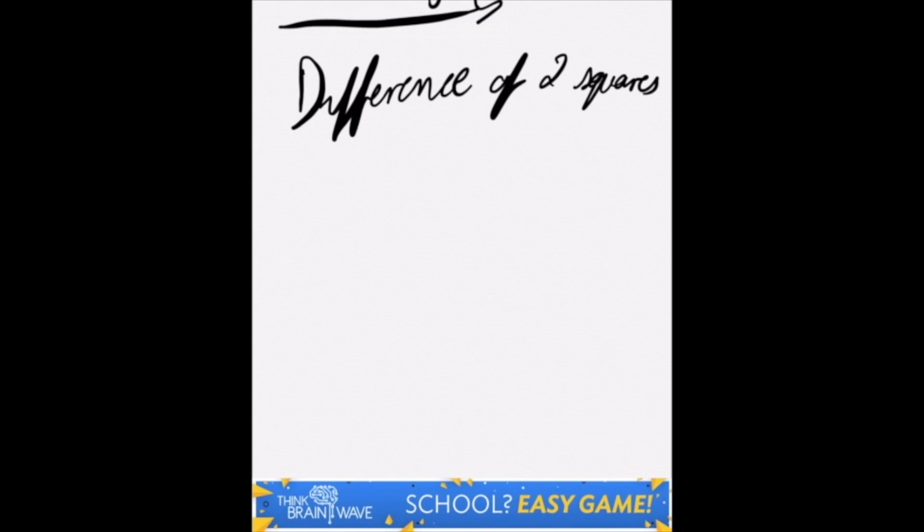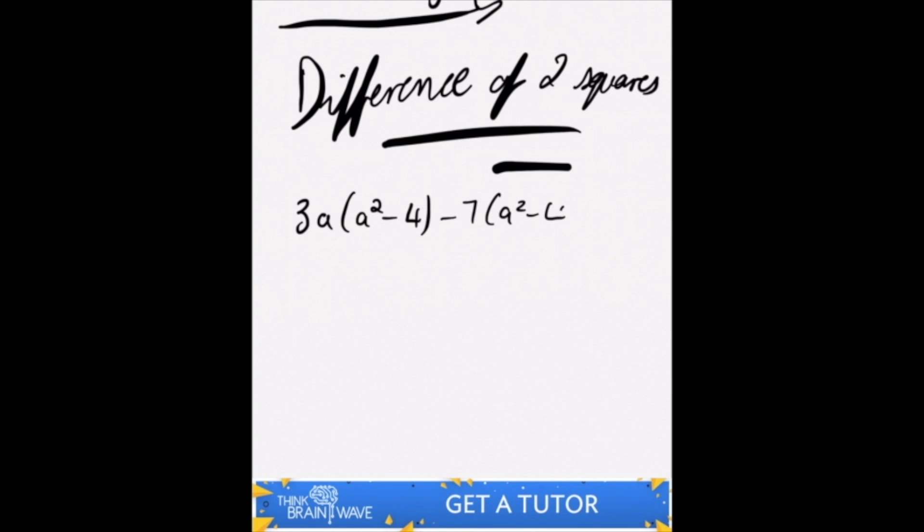Today we'll be doing the difference of two squares. Let's start with a problem. We'll have 3a open bracket a squared minus 4 close bracket minus 7 open bracket a squared minus 4 close bracket.